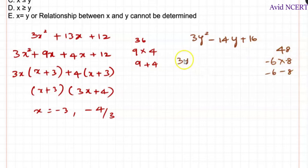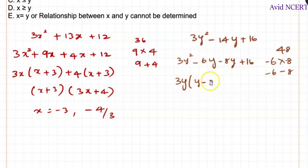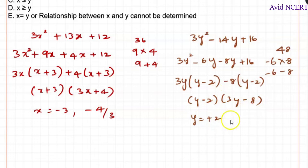Substituting, we get 3y² − 6y − 8y + 16. Taking common from the first two terms: 3y(y − 2) − 8(y − 2). Taking (y − 2) as common gives (y − 2)(3y − 8). So y = +2 and y = 8/3.